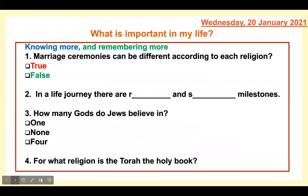Question one: marriage ceremonies can be different according to each religion — write true or false. Question two: in a life journey, there are blank and blank milestones — what are those two missing words? One begins with an R, one begins with an S. Question three: how many gods do Jews believe in — one, none, or four? Question four: for what religion is the Torah the holy book?